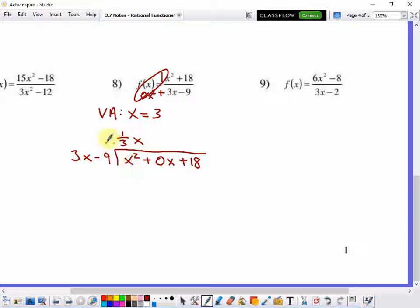And what I'm going to end up with is 1 third x. And when I distribute that 1 third x on 3x minus 9, 1 third x times 3x is x squared. And 1 third x times negative 9 is minus 3x. And I need to subtract those. x squared minus x squared is 0. 0x minus negative 3x is positive 3x. And then I need to bring down that plus 18. 3x divided by 3x is 1. So plus 1. And I distribute that 1. And I get 3x minus 9. And I subtract that quantity.